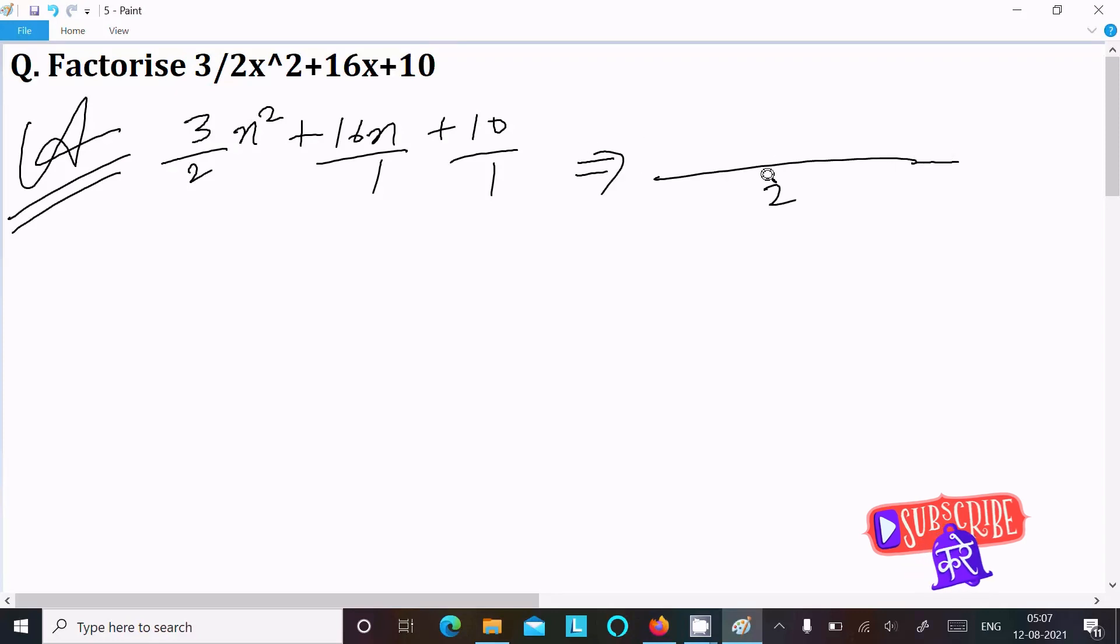Then after, 2 divided by 2, that comes 1 times 3x², so this here 3x² plus 2 divided by 1, 2 comes 2 times 16, so that comes 32x. The next is 2 divided by 1, 2 comes 2 times 10, so this comes 20.